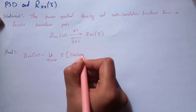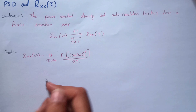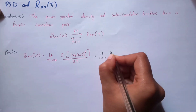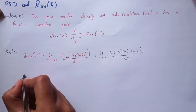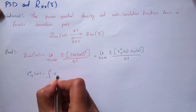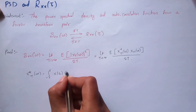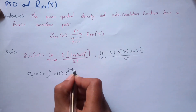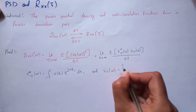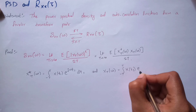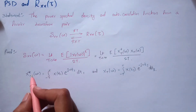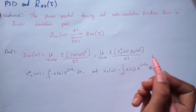Let's prove it. As we know, PSD is written as the limit as T tends to infinity of 1/(2T). We have also seen the splitting of this term in our previous video. We can write X*(ω) as the integration from -T to T of x(t1) e^(jωt1) dt1, and Xt(τ) as the integration from -T to T of x(t2) e^(jωt2) dt2.